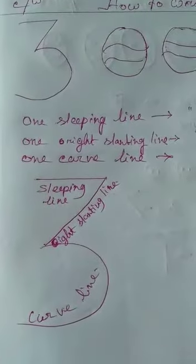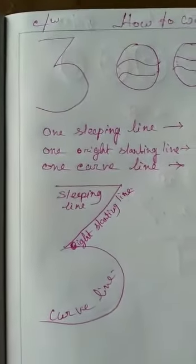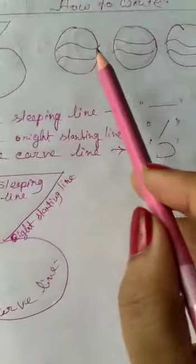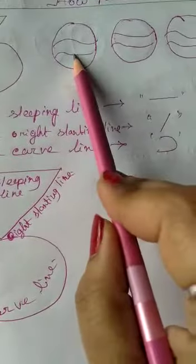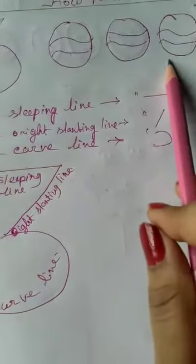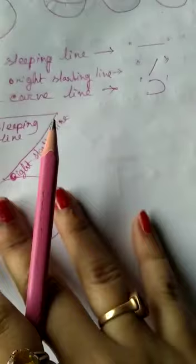This is the number 3. First count 1, 2, 3. How we will write the number 3?